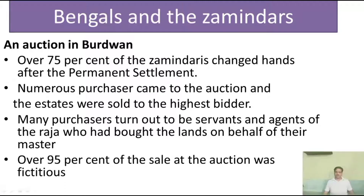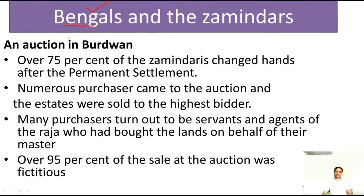First, we will discuss Bengal and the Zamindars. We start our chapter with Bengal because when the Britishers came to India, they set up their rule firstly in Bengal after the Battle of Plassey, fought in 1757. Thereafter there was the Battle of Buxar, after which they got the Diwani of Bengal. From there they started collecting revenue under a new policy. There used to be the Zamindari system in Bengal at that time.